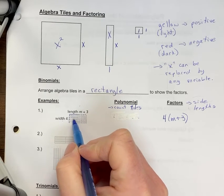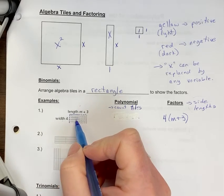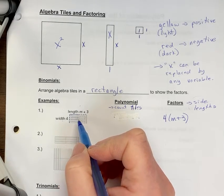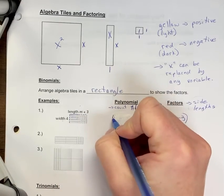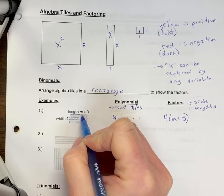So I have one, two, three, four of these long skinny ones. Okay, those are my m tiles. So we have four of those. So 4m. And then we count how many of the little guys we have. These are the one tile.